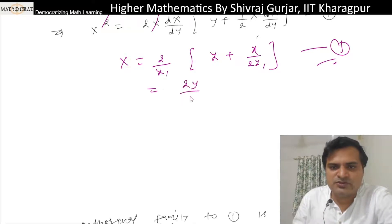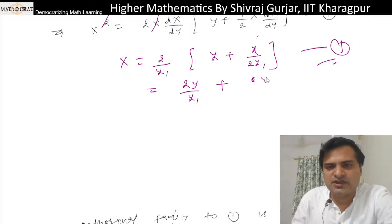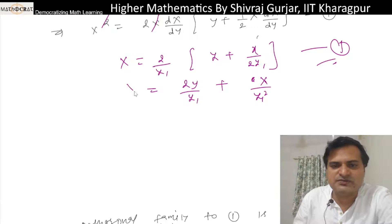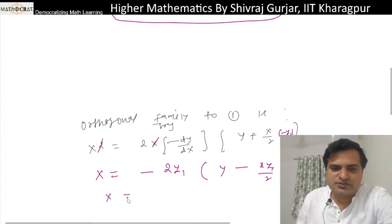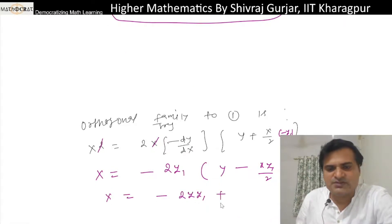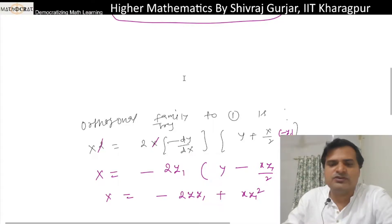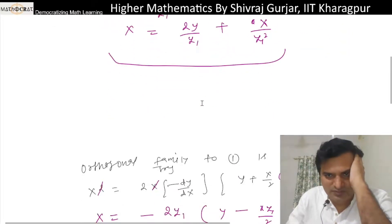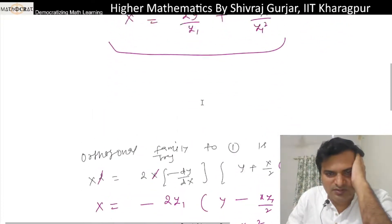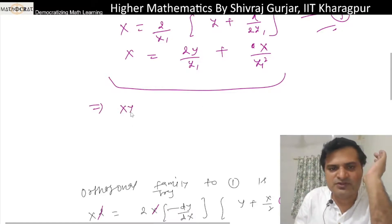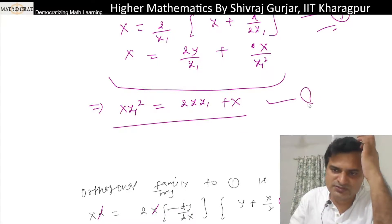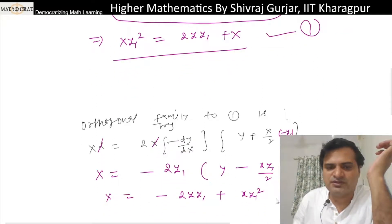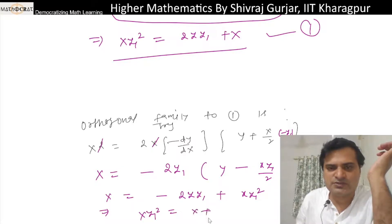Together simplifying: 2y·y₁ plus x divided by y₁². This is the differential equation. Simplifying further: x equals minus 2y·y₁ plus x·y₁². So x·y₁² equals x plus 2y·y₁.